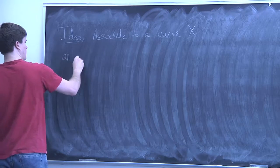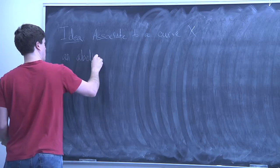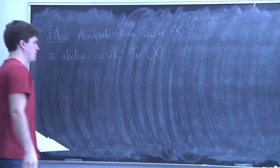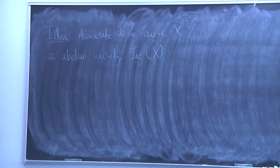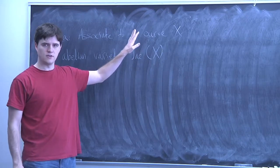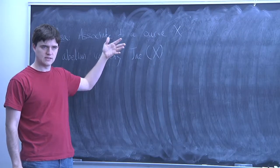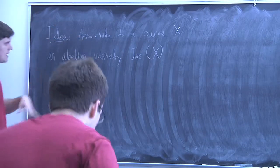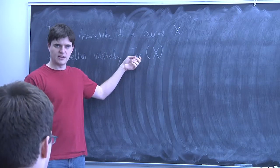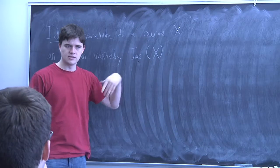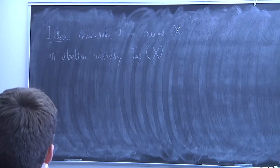That's an abelian variety. These two will be closely related, and the reason we want to do this is because abelian varieties, in many situations, are easier to study than curves. So we can try to study the abelian varieties, learn things there, and then translate information back to curves. In particular, later on we're going to study the modular curves and the Jacobian, prove that some quotient of it has rank zero, and then use that to control the rational points on our original curve.